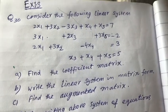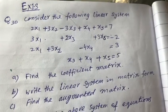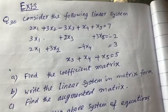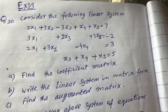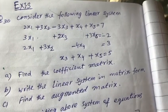Assalamu alaikum dear students, this is the 30th question of exercise 1.3. We have to consider this linear system. In this system, there are four equations and five unknown variables.